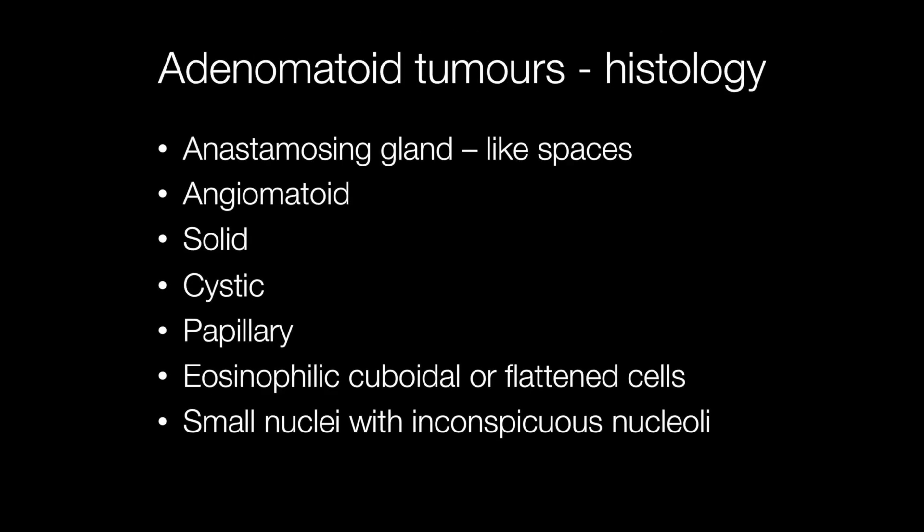Histologically, adenomatoid tumours have a variety of patterns. These include anastomosing gland-like spaces and angiomatoid patterns, solid patterns, cystic areas, and papillary patterns. The cells are eosinophilic and may be cuboidal or flattened. The nuclei are small with inconspicuous nucleoli, and mitotic figures are infrequent. Because of the variation in pattern types, adenomatoid tumours can sometimes be a challenge to diagnose.